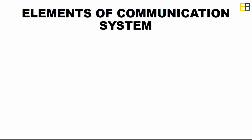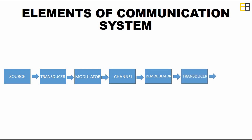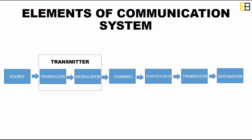There are mainly seven elements of a communication system: source, transducer, modulator, channel, demodulator, transducer, and finally destination. The transducer and modulator blocks together are known as the transmitter block, and the demodulator and transducer block together is known as the receiver block.